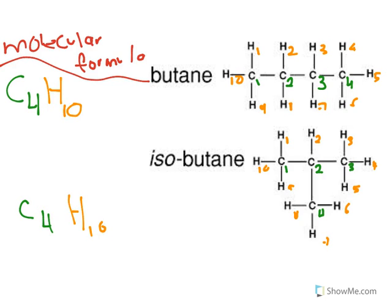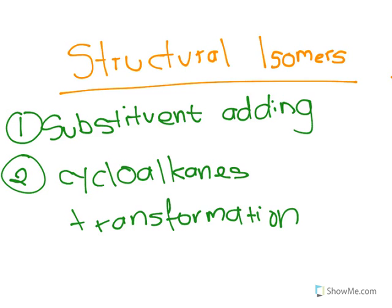Now I want to teach you about isomers. Isomers are basically compounds that have the same molecular formula but different structural formula. These two — butane and isobutane — have the same molecular formula but different structural formulas, so these compounds are called isomers of each other. Butane is an isomer of isobutane and vice versa, and both are structural isomers.